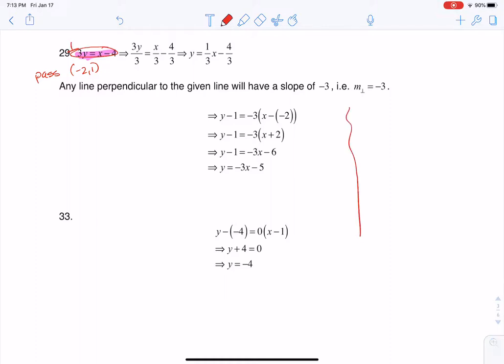So let me just do some work over here. If I have 3y = x - 4, what I want to do is find the slope of this line. Let me write slope, because if I can find the slope, then I can take its opposite reciprocal or negative reciprocal, and that will be the slope of the line I want. So if I want to find the slope of this line, I'm going to put it into slope-intercept form, which means I'm going to divide both sides by 3.